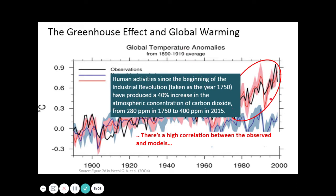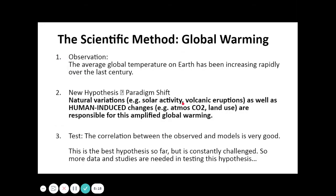The red curve is the model output which considers both natural variabilities and human-induced variabilities. Our new hypothesis is that natural variations as well as human-induced changes are responsible for this amplified global warming. This hypothesis is still undergoing a paradigm shift, with many skeptics, but it has been supported by many experts around the globe through several studies, experiments, and modeling.